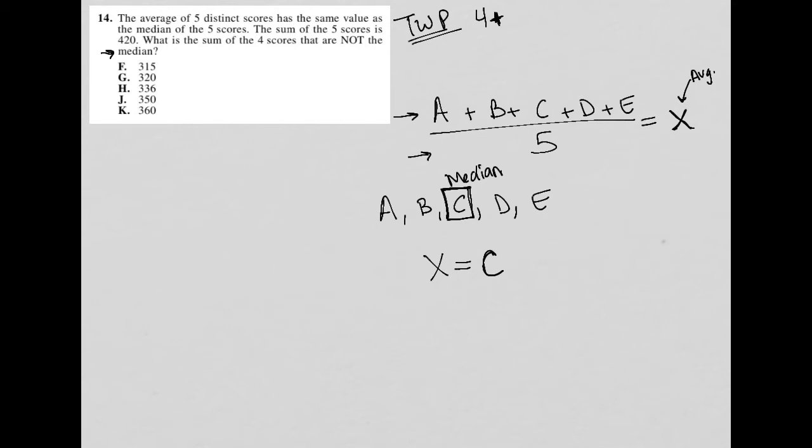Then it goes on to say the sum of the five scores is 420. Well, that means that all of this represents 420. That's very useful because now I have a fraction that instead of having a, b, c, d, and e as my numerator, I have 420 as the numerator, which I can simplify. So 420 divided by 5, I can actually find an answer for that. Going to my calculator, 420 divided by 5 is 84, which means that x equals 84.